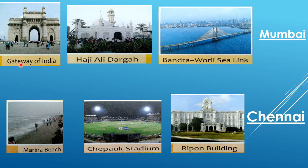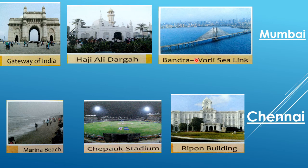Next picture: Gateway of India, Haji Ali Dargah, Bandra Worli Sea Link. Have you ever been to these places? I'm sure many students have been to these places because these are famous places — which city? Mumbai! Gateway of India, Haji Ali Dargah, and Bandra Worli Sea Link are the famous places of metro city Mumbai. Mumbai is India's most famous city. People come from far and wide to work, study, and do business here. And Mumbai is also India's commercial capital.